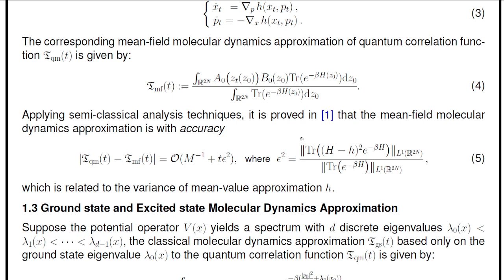Applying semi-classical analysis techniques, it is proved that the mean-field molecular dynamics approximation has this accuracy term, which involves the first term — the inverse of the mass ratio M. Since the mass ratio between nuclei and electrons is much larger than 1, the inverse of M is small. The additional term is proportional to the correlation time T, and the constant before T, epsilon squared, is related to the variance of the mean-value approximation h. For some details of this proof, please see reference 1, which is now in archive and submitted.